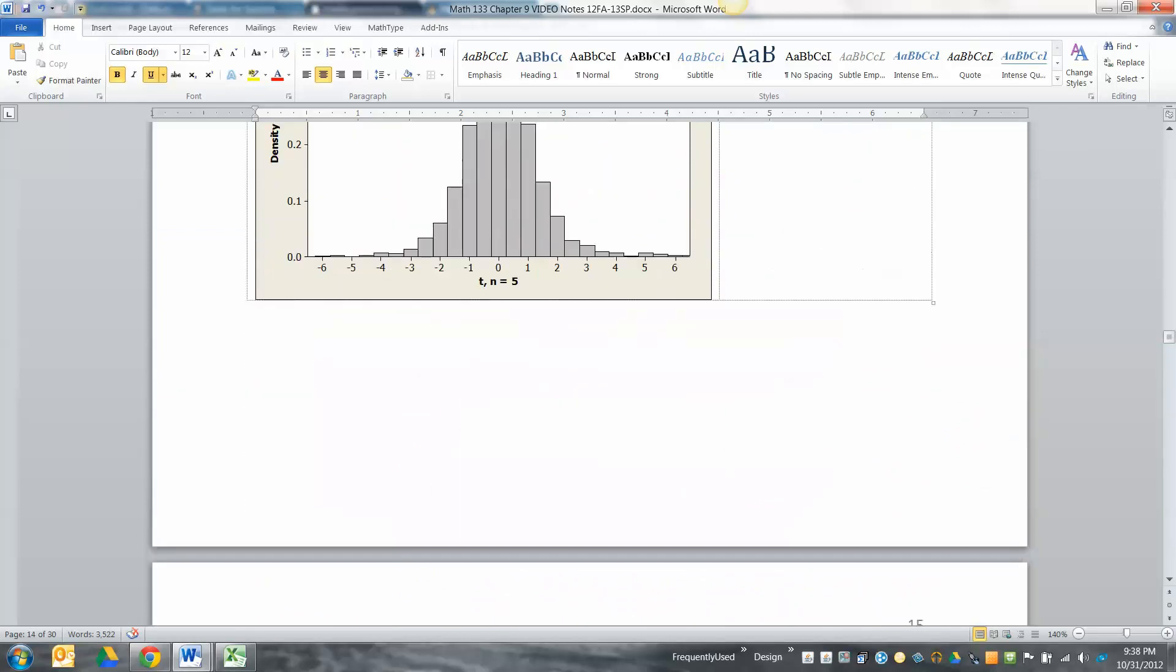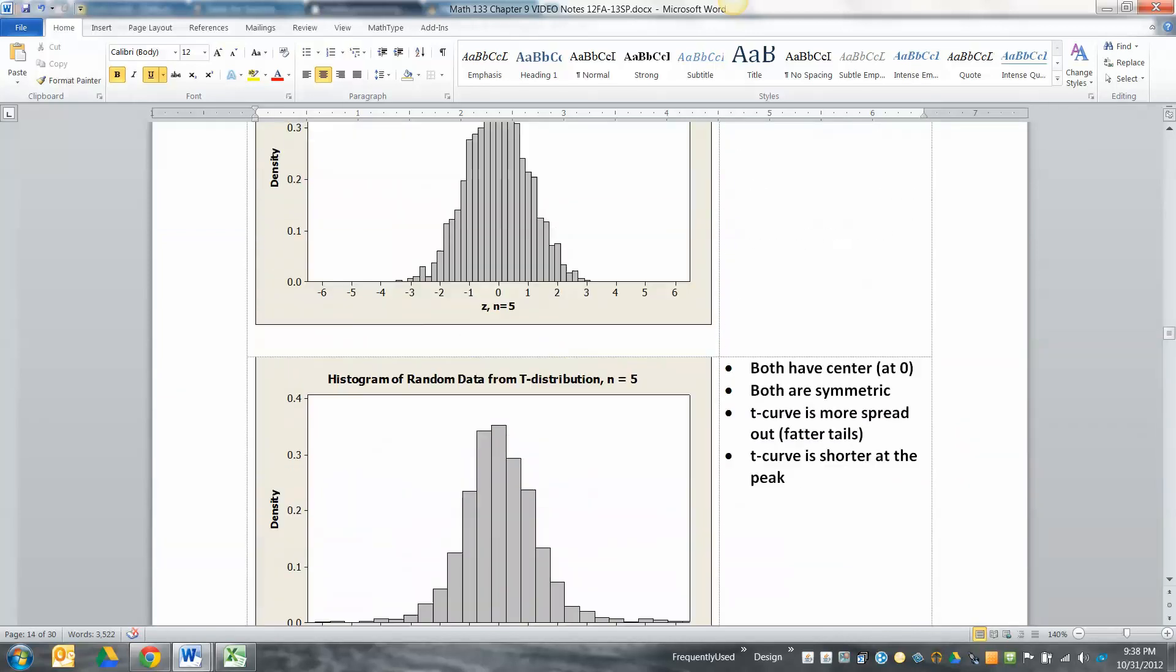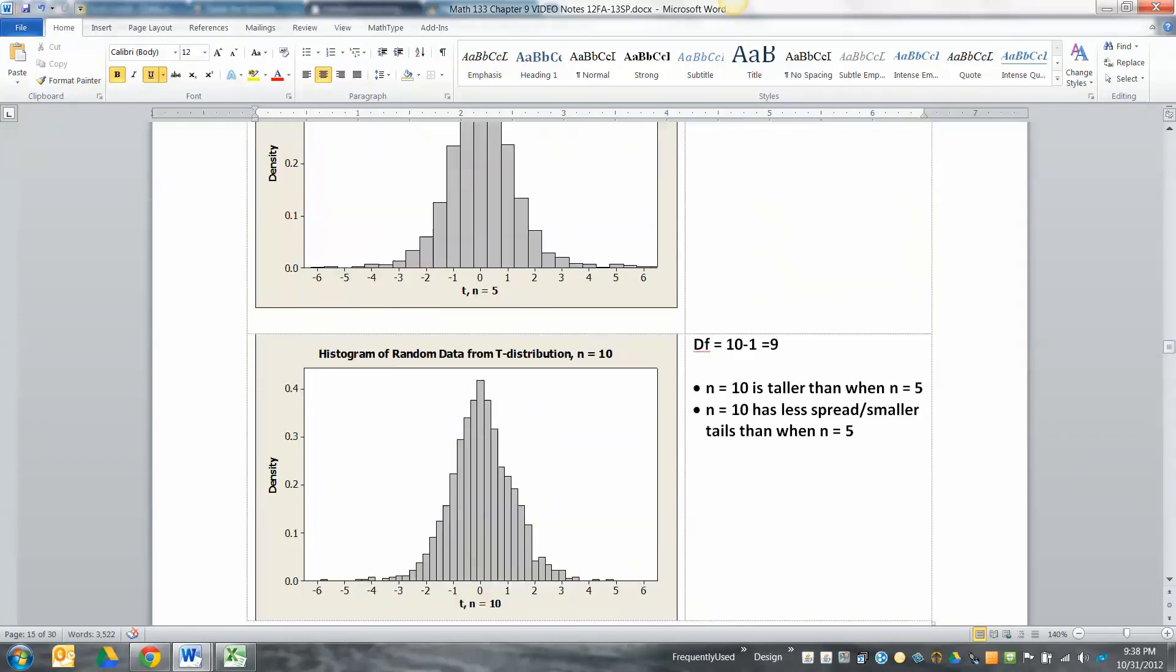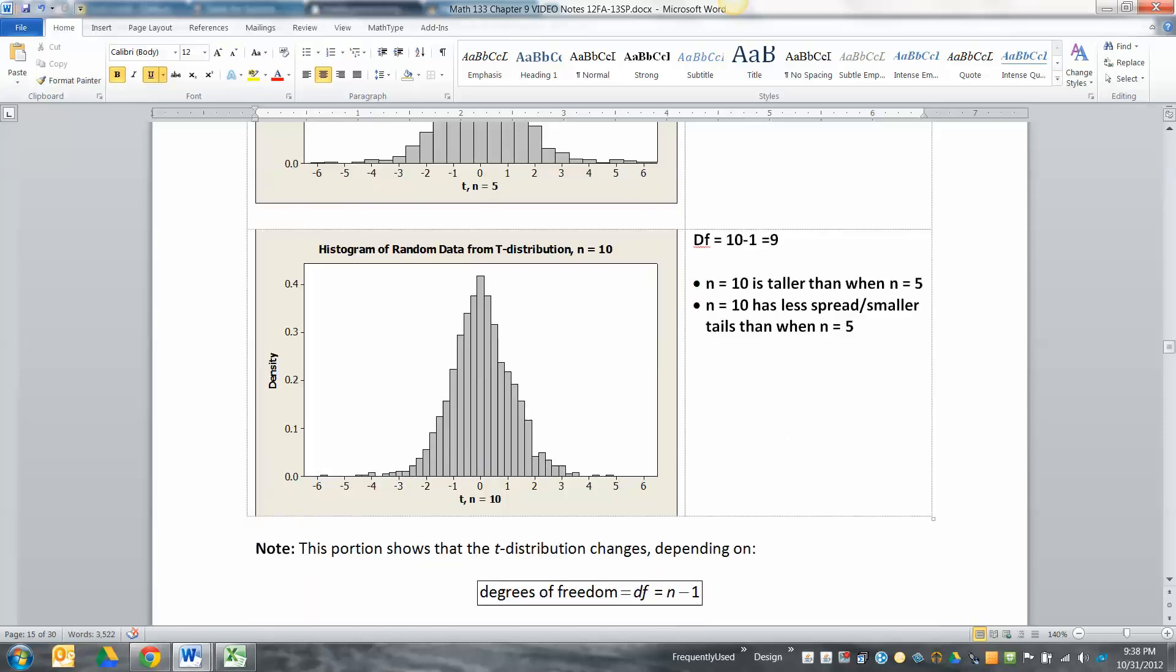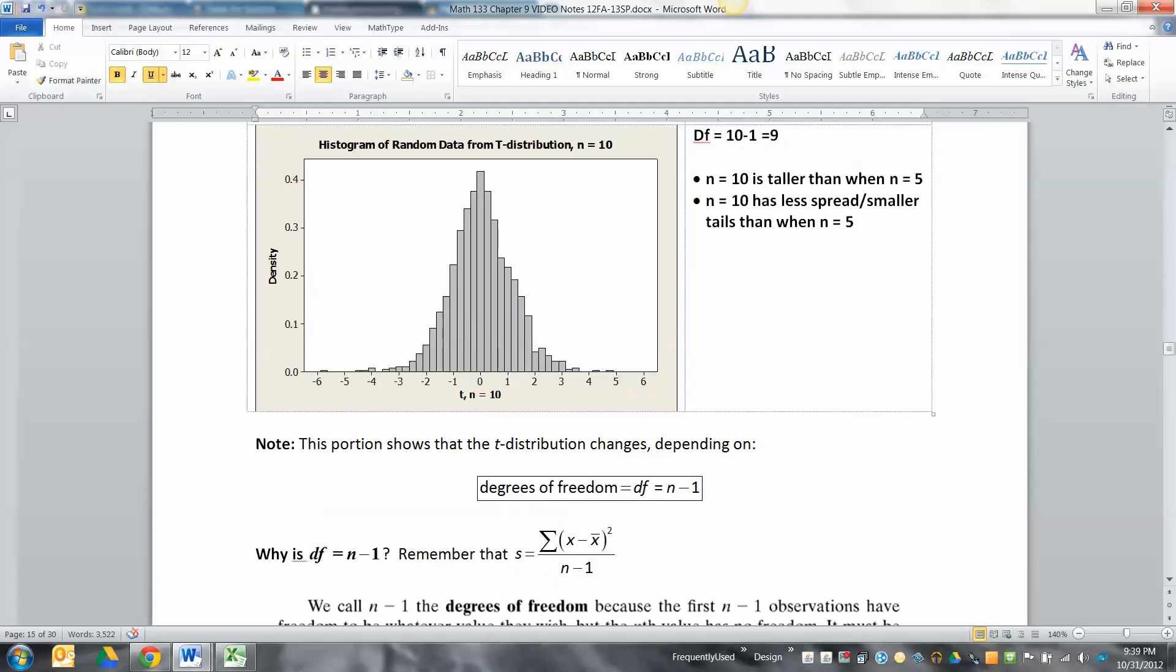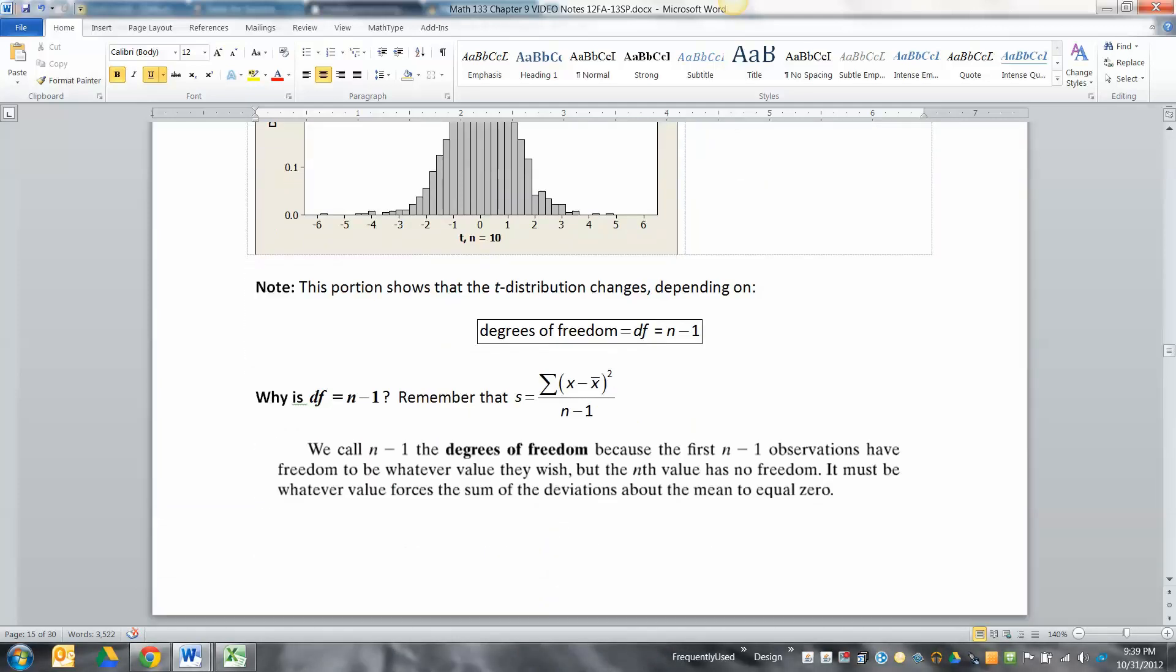We learned about it - it's got bigger tails, a shorter peak, and fatter tails than the normal curve. Then we learned that there's infinitely many of them, tons and tons of t-curves based on your n or your degrees of freedom, with degrees of freedom being the denominator of that s.